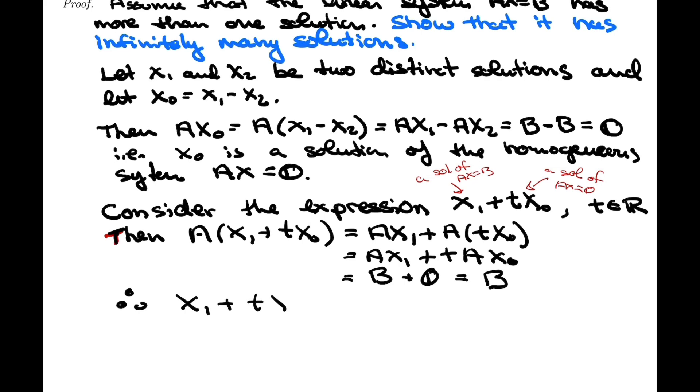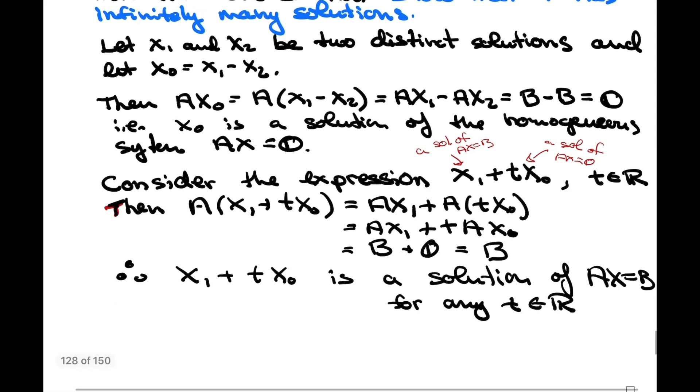In other words, we've shown that X1 plus T X0 is a solution, is a solution of AX equals B. And this is true for any, for any scalar T, right? For any T belonging to R. And so if this is true for any T belonging to R, that means that there are infinitely many solutions,